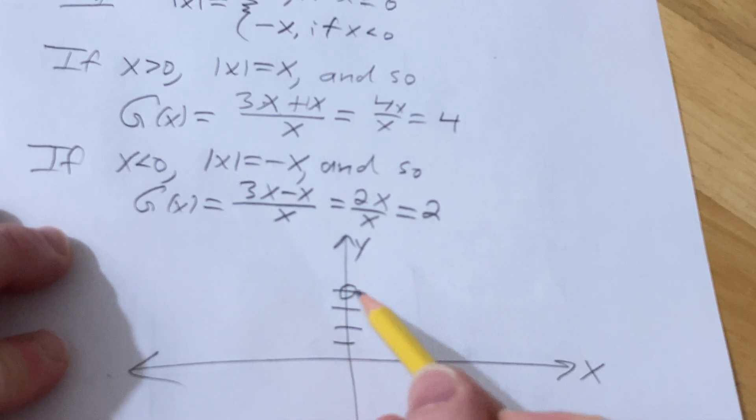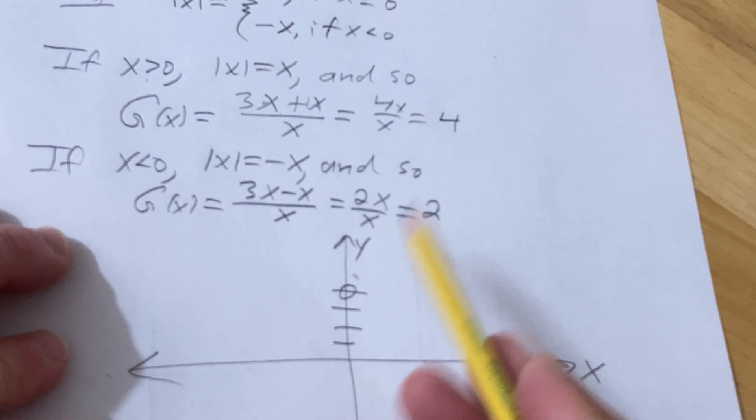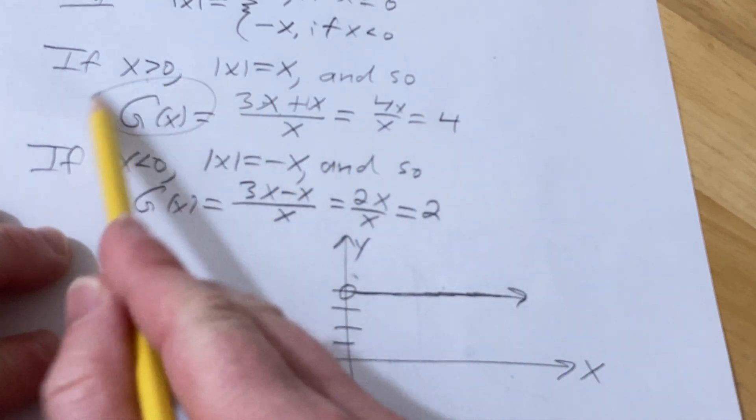I'm going to put a little hole here because it's greater than 0, we're not including 0. It's going to be 4, so for all the x's over here, we get y equals 4. For x greater than 0, the y values are 4.